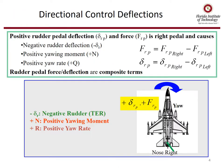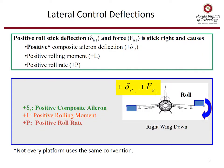For directional control, we define positive rudder pedal deflection and force as right pedal, and it causes negative rudder deflection but a positive yawing moment and a positive yaw rate. For lateral control, positive roll stick deflection and force is stick right, and it causes a positive composite aileron deflection, positive rolling moment, and positive roll rate. Not every platform uses this convention, but this is the one we'll use for our class.